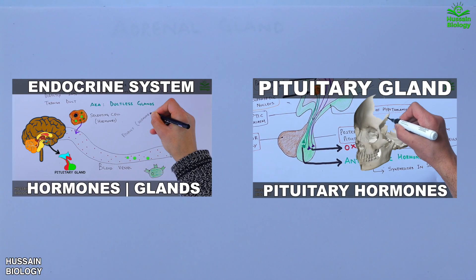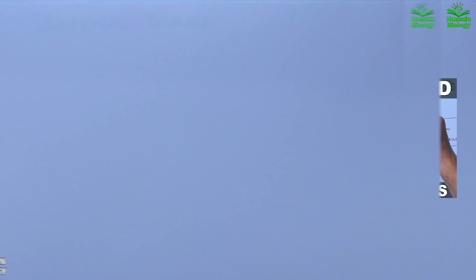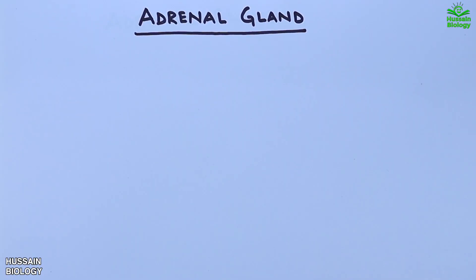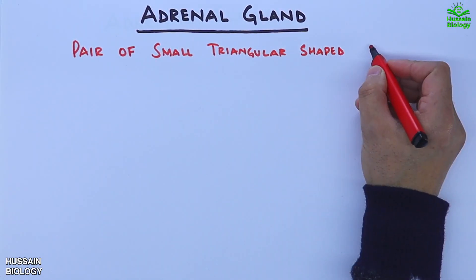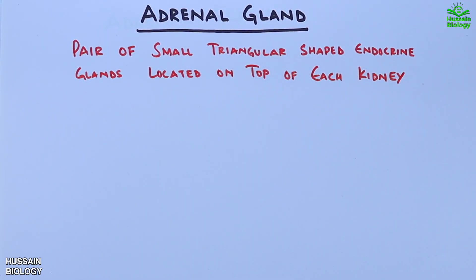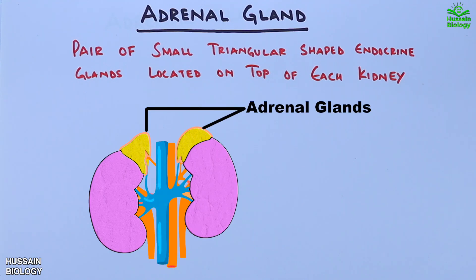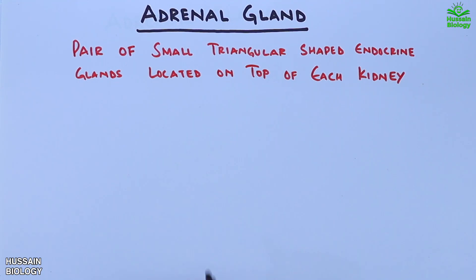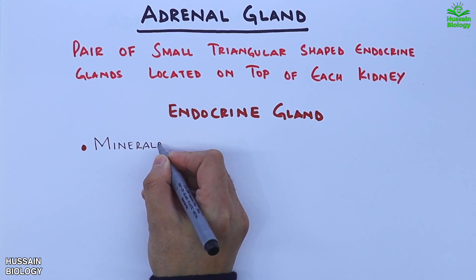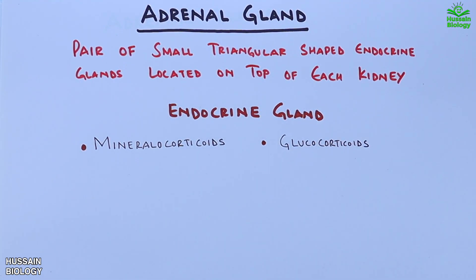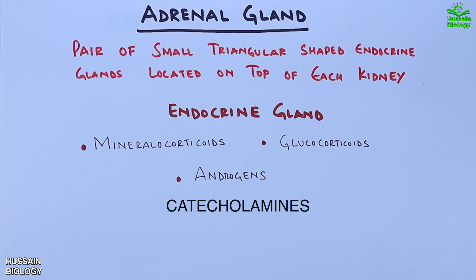We are in the endocrinology video series — the previous videos are linked in the description. In this video we'll be discussing the adrenal gland. These are a pair of small triangular-shaped endocrine glands located on top of each kidney. Being endocrine glands, they secrete different types of hormones like mineralocorticoids, glucocorticoids, androgens, and catecholamines, which we'll see in detail later.